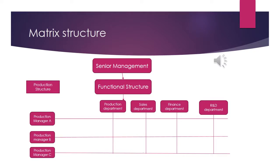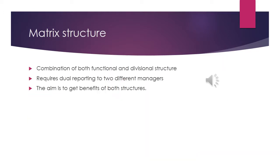You can see senior management at the top, with the functional structure comprising the production department, sales department, finance department, and research and development department. On the left side, the divisional structure is shown with production manager A, production manager B, and production manager C, as seen in the previous slide.